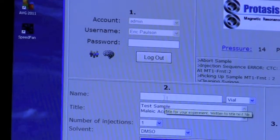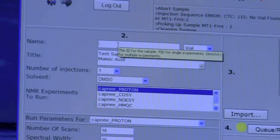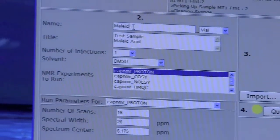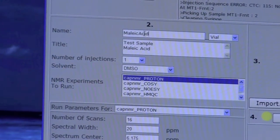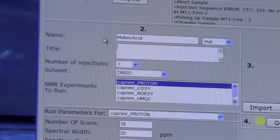And then number two, you want to put in the name. This name is saved to disk, so you should not use any spaces or funny characters. And then put in the title. This is the title that gets saved with your data, just like in IconNMR.